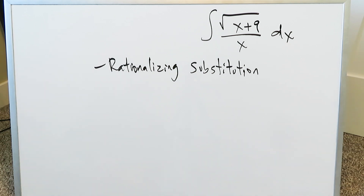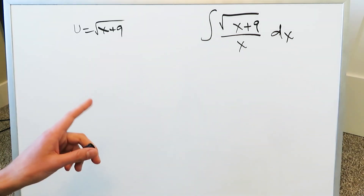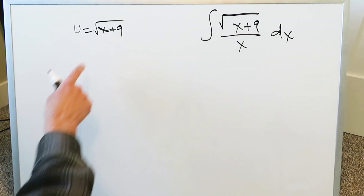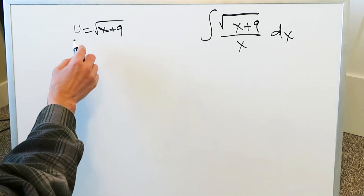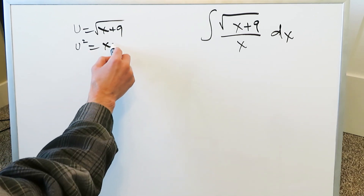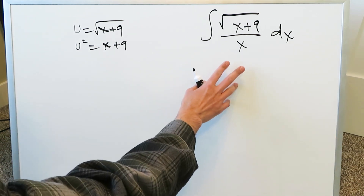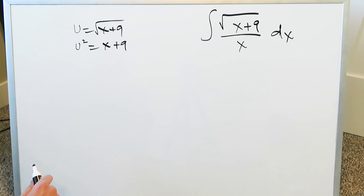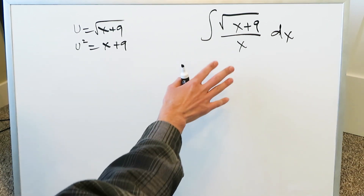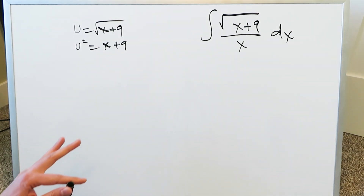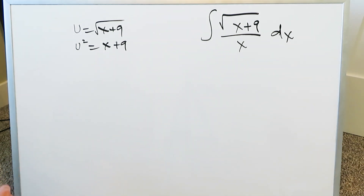We have as our integral a numerator expression — a root of x plus 9 — and in the denominator we have x. When you're utilizing this rationalizing substitution you have to come up with a good substitution. A good substitution would be exactly what you see in the numerator: u is equal to square root of x plus 9. But having that root creates complexity, so you look at it as u squared equals x plus 9, and now you've eliminated that square root. You're doing this rationalizing substitution to convert this into a true rational function such that you can then integrate it.